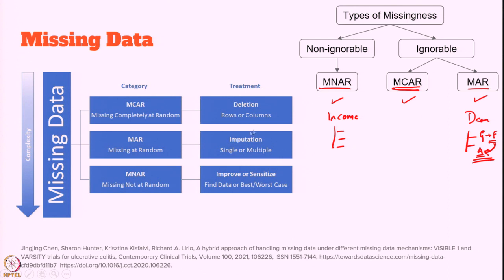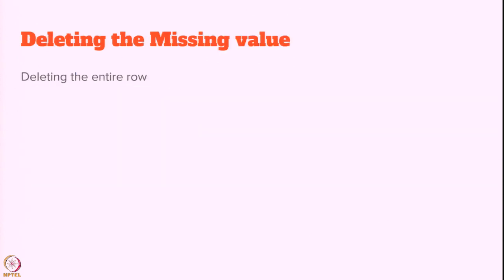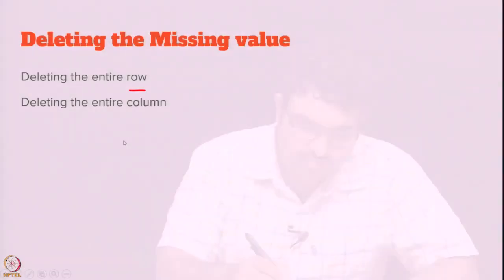We will see what imputations we can do for MAR and MNAR. If you have a missing value and the dataset is extremely large, one option is to delete the entire instance — the entire row — if it does not contain the required information. If one attribute is missing for all instances, we can delete the entire column.